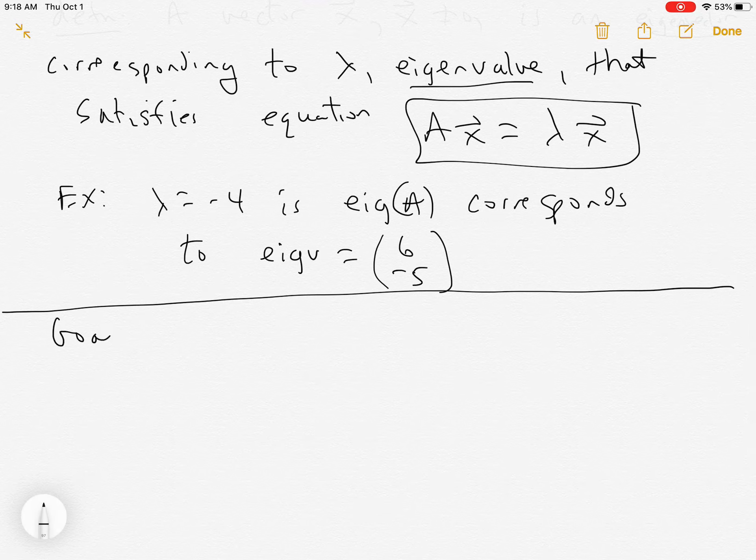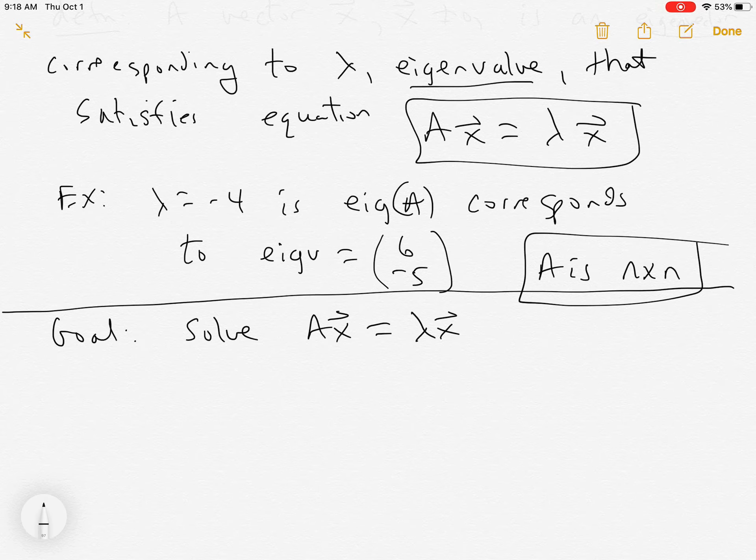All right, so the goal here is to solve the matrix equation Ax = λx, and it's important that A is n by n. A is n by n, lambda is a constant, and so x is n by 1, a vector. Okay, so anytime you solve, you're always setting stuff equal to zero, so we're going to take Ax - λx, and set that equal to the zero vector.